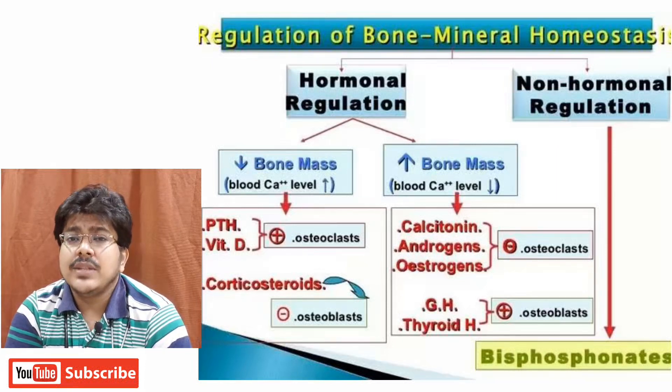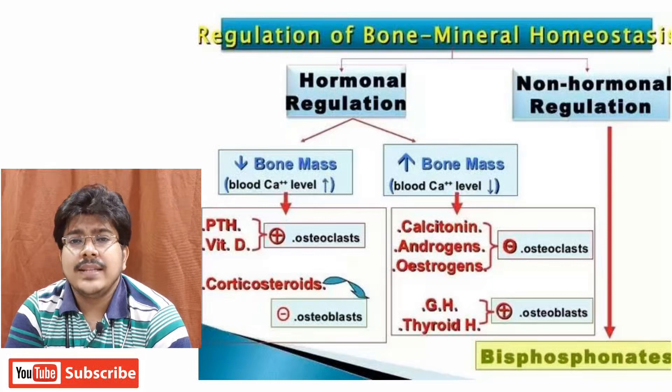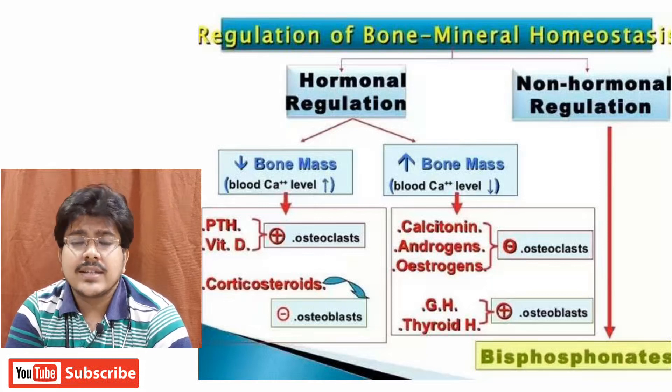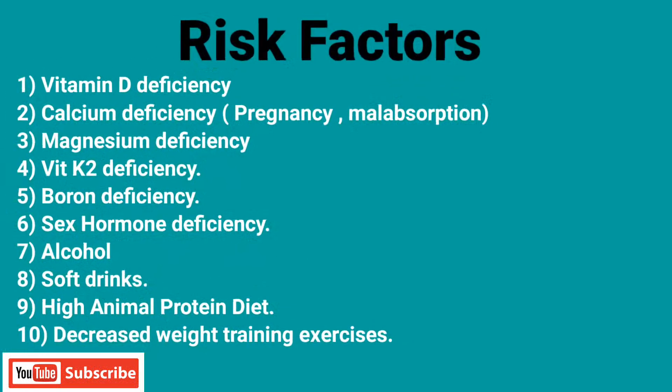Other drugs used to increase bone density are bisphosphonates, which are used under strict precaution and guidance of a physician. Risk factors for osteoporosis include Vitamin D deficiency, calcium deficiency during pregnancy and in cases of malabsorption, magnesium, Vitamin K2 and boron deficiency. Sex hormone deficiency during old age is a major risk factor. Increased alcohol consumption, soft drinks containing phosphoric acid which binds to calcium, and high animal protein diet — which is also acidic — can all decrease calcium in the bones.